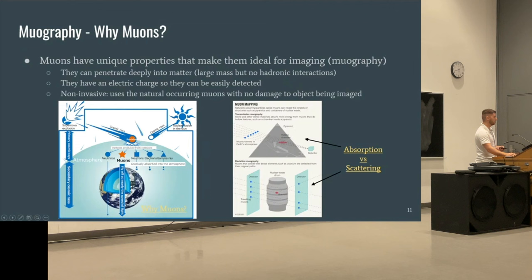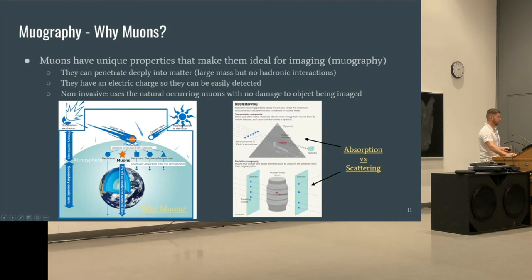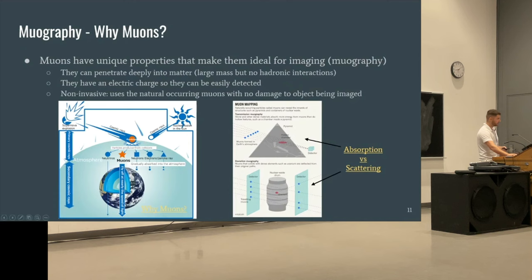I also want to quickly mention another type of muon imaging involving scattering. When muons go through matter they scatter, and the more matter they go through the more they scatter. If you can measure the scattering angle you can tell more about the internal structure with higher resolution than simple absorption. An example application is nuclear waste detection, since uranium is quite dense. The drawback is that you need two detectors on either side and must track individual muons through the structure.